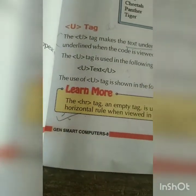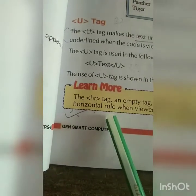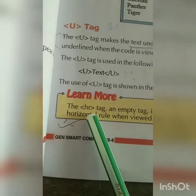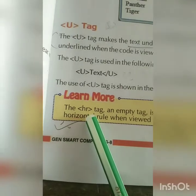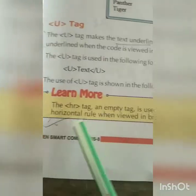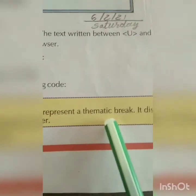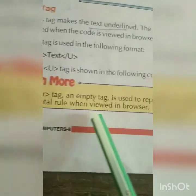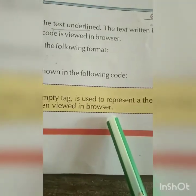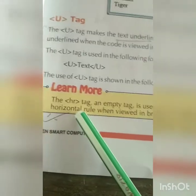Next, notice the yellow box — that is the horizontal rule. The horizontal rule tag is written with a less-than sign, h r, and a greater-than sign. The HR tag is an empty tag used to represent a thematic break. It displays a horizontal rule when viewed in the browser.